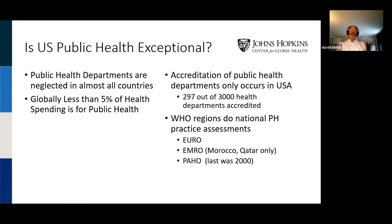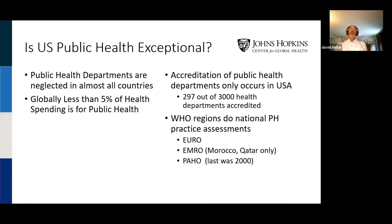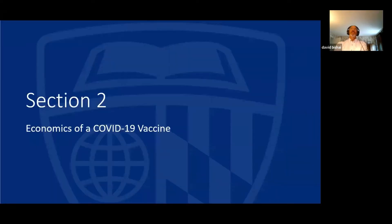Accreditation is something clinicians do — becoming board certified and maintaining certification, hospitals becoming accredited. But accreditation of public health departments is only available in the USA, and we've only accredited 10% of our health departments. 90% of American health departments remain unaccredited and don't go through quality improvement. Outside the USA, WHO has only done national public health practice assessments in the European, Middle East, and Eastern Mediterranean regions. The Pan American Health Organization has only done public health accreditation as of 2000 — it's been 20 years since the Western Hemisphere took stock of its public health practice. That was section one: the economics of the public health sector — how little we spend on it, how disorganized it's been, and what it needs to do better.